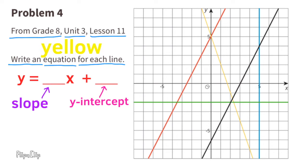Now let's look at the yellow line. The yellow line has a slope that goes down 3, so that's a negative 3, and to the right 1. So it's a negative 3 slope. And the y-intercept is located at positive 5. Now the equation reads y equals negative 3x plus 5.